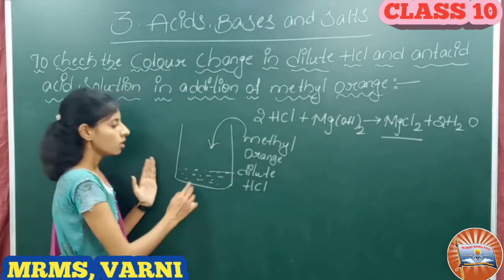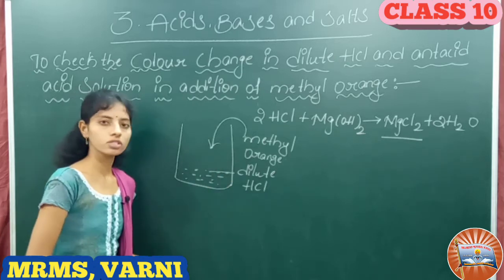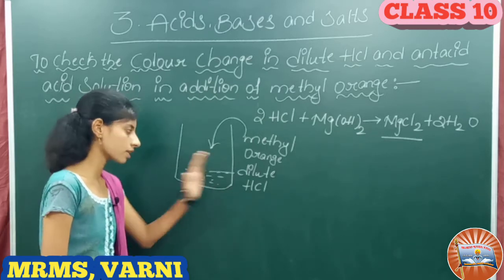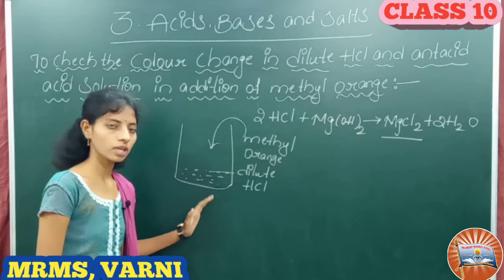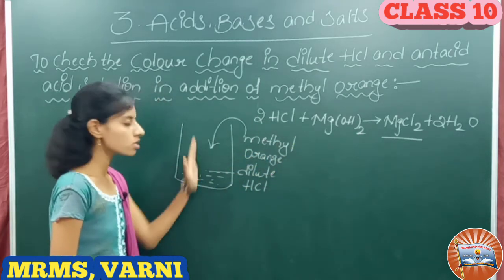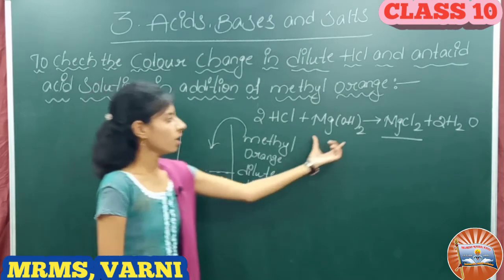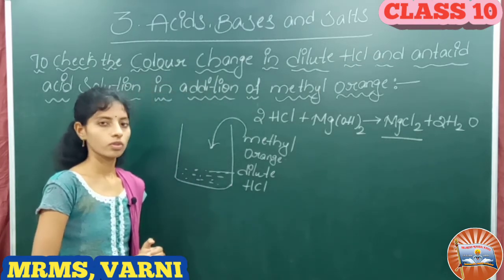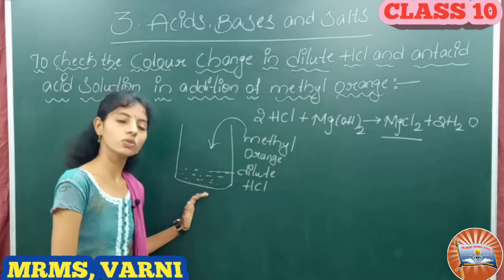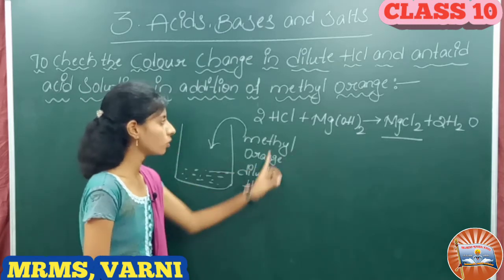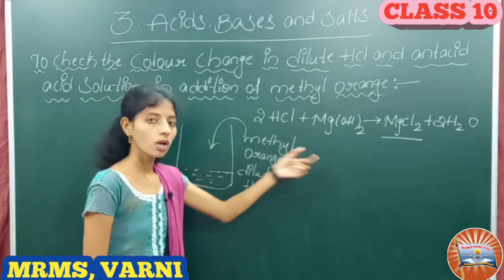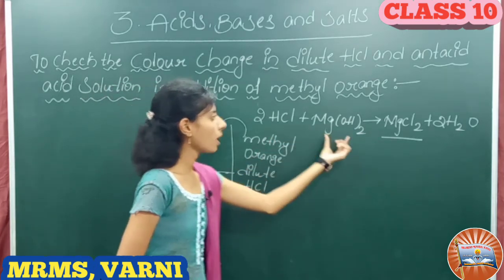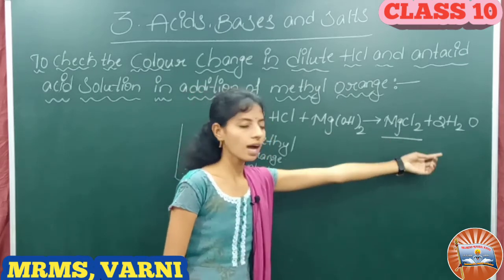Before, we were adding methyl orange indicator to the HCl solution, so the color of the solution changed into red. When we are adding antacid tablet powder to this same solution, the color of the solution is changed into yellow. Because this antacid tablet powder is a mild base, that is why the solution becomes neutral. The acid and base both react — when acid reacts with base, it forms salt and water. This is the acid and this is the base; it forms salt and water.